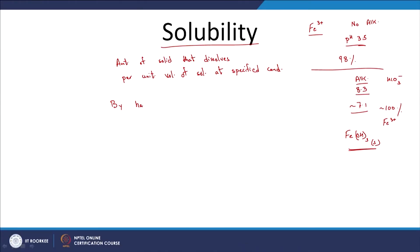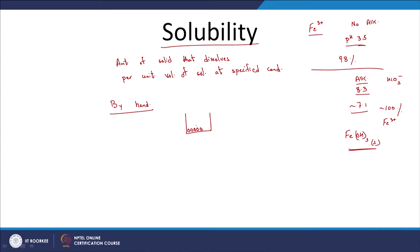To calculate solubility by hand, you start with the assumption that there is a solid phase in equilibrium with water. For example, if the solid is CaCO3, it will be in equilibrium with Ca2+ and CO32-. You want to find the concentration of the relevant compound in the aqueous phase that is in equilibrium with the solid.